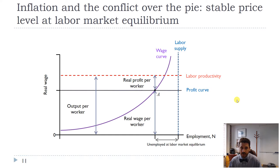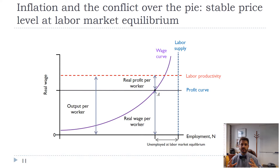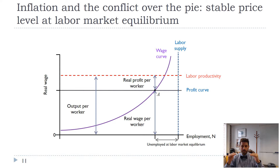Here's our picture of the labor market. We have our wage curve — wages go up as the unemployment rate shrinks. Remember, this is employment on the horizontal axis, so unemployment is increasing as we move to the left. We have labor productivity and our profit curve. At point A, when we're at equilibrium, workers are getting the real wage they expect — meaning they can buy what they want with their wage — and firms are getting some amount of real profit. That output per worker gets split between workers and firms. When we're at equilibrium, there's no pressure on prices to change, assuming there are no outside shocks.